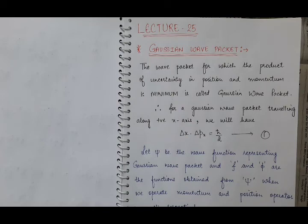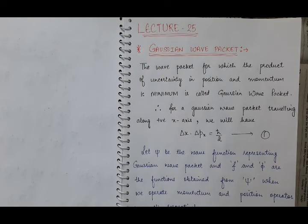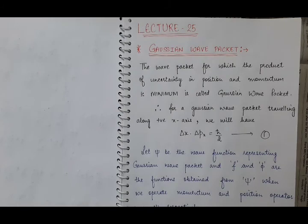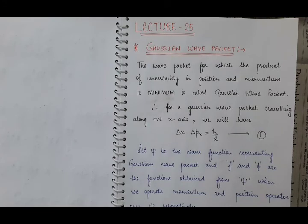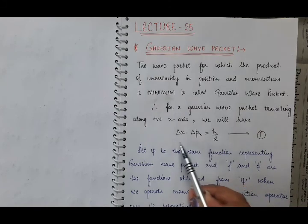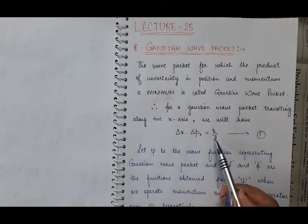Now, what is this Gaussian wave packet? This Gaussian wave packet is the wave packet which is associated with the particle in motion, and for this wave packet, the product of uncertainty in position and momentum is minimum. Minimum means delta x into delta px is equal to h-bar by 2.